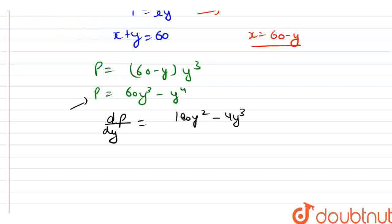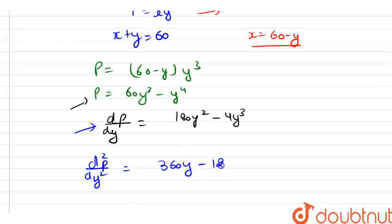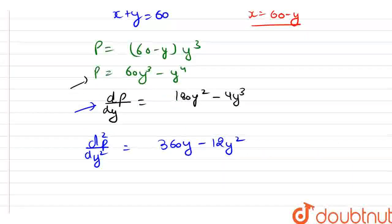Now let's differentiate dP/dy again. So we have d²P/dy² and that will be equal to 360y minus 12y².